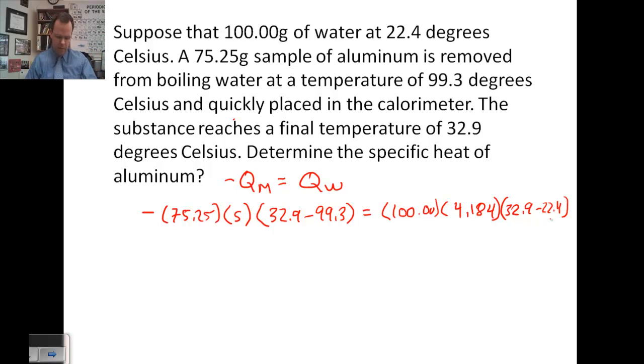So let's multiply out the one side, 32.9 minus 22.4 times 4.184 times 100.